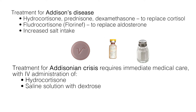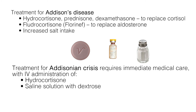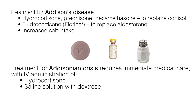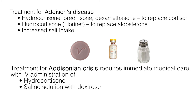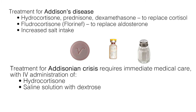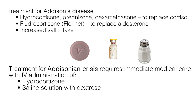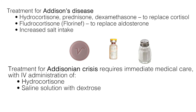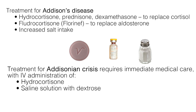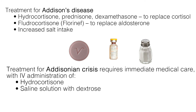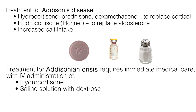The treatment for Addison's disease usually involves one of the following. Lifelong hormone replacement therapy is given to correct the levels of steroid hormones, usually given orally, but injections can be given if the patient is vomiting. Hydrocortisone or prednisone is given to replace cortisol, and fludrocortisone is given to replace aldosterone. The patient needs plenty of sodium intake, especially during heavy exercise, hot weather, diarrhea, or a stressful situation such as an infection or operation. Treatment for Addisonian crisis requires immediate medical care with IV administration of hydrocortisone and saline solution with dextrose.